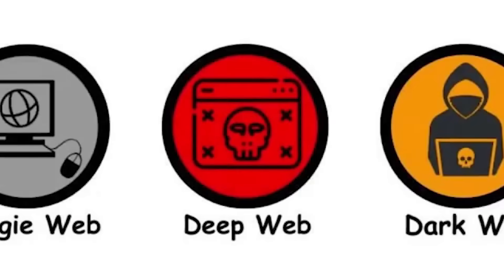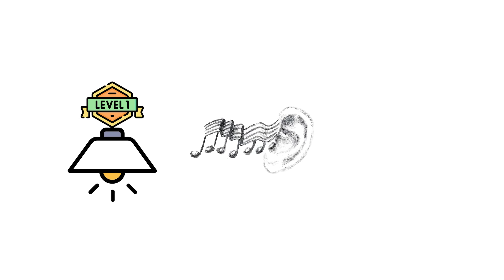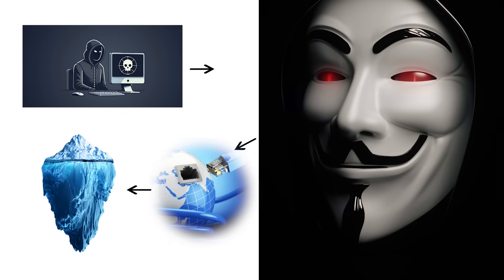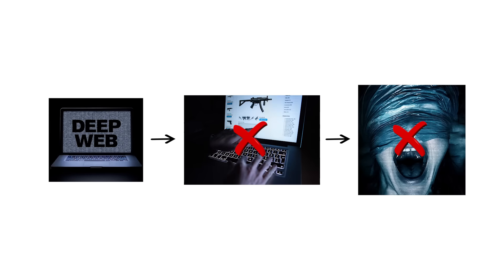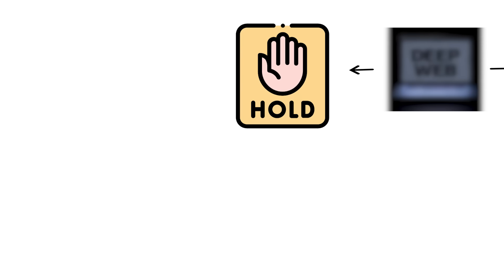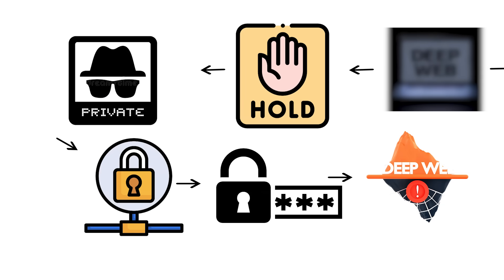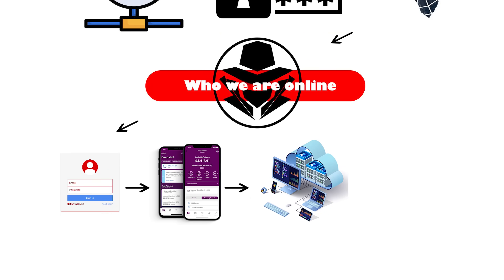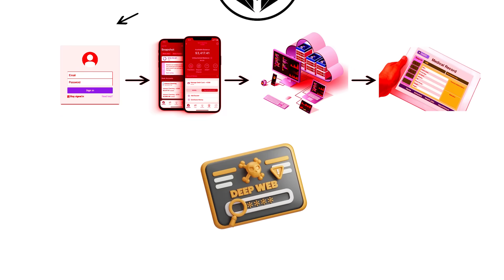Level 3, the deep web. Now you're officially below the surface. The light from level one is gone. The noise from level two fades away. And suddenly, everything feels quiet. This is the deep web — the true mass of the internet iceberg, stretching endlessly beneath what most people ever see. It's not criminal. Not chaotic. It's just hidden. The deep web holds everything that's private, personalized, or protected — the data that defines who we are online. When you log into your email, access your bank account, open your cloud storage, or check your health records, you're not surfing the visible web. You're already deep in it.